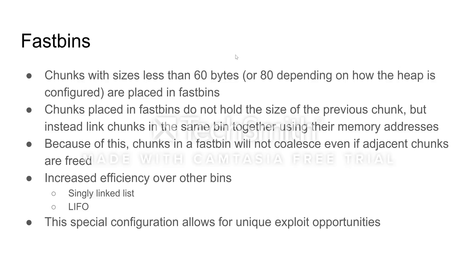The next thing we're going to talk about is fast bins. Chunks with less than 60 bytes — or 80, depending on how you configure it — are placed in fast bins. Chunks in fast bins do not hold the size of the previous chunk, but rather link chunks together using a last-in-first-out singly linked list method. Because of this, the chunks in a fast bin will not coalesce even if adjacent chunks are free. This special configuration, while efficient, can lead to unique exploit opportunities if not programmed correctly.